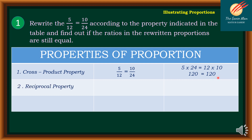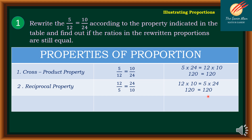Next is the reciprocal property. Simply interchange 5 and 12 as well as 10 and 24, giving 12 over 5 is equal to 24 over 10. Using cross-multiplication, 12 times 10 is equal to 5 times 24. Clearly, 120 is equal to 120. Number 3 is the alternation property: put 5 over 10 is equal to 12 over 24, then use the cross-products. So 5 times 24 is equal to 10 times 12, giving 120 is equal to 120, therefore it is a proportion.